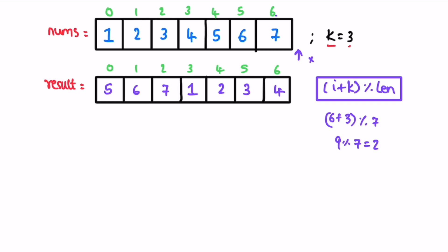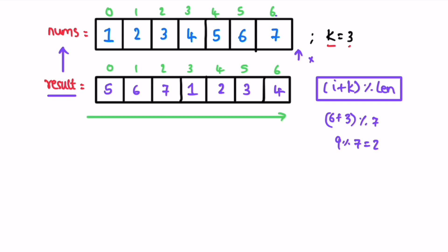In this question we don't have to return anything — you just have to rotate the nums array and it will be automatically returned as output since the return type is void. But we have our output inside the result array, so we have to put it back into the nums array. We iterate through the result array from left to right and add one element at a time to its respective position inside nums.